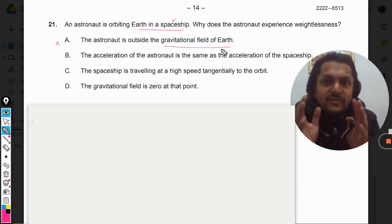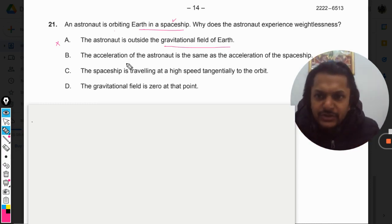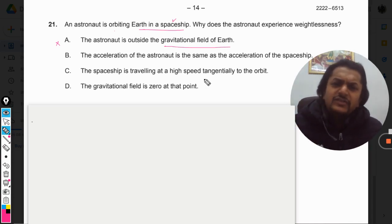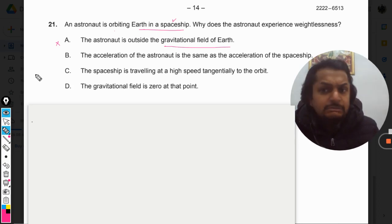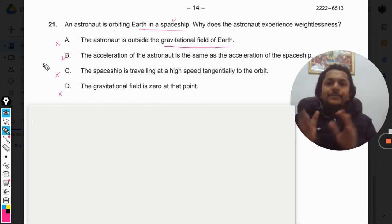Second: The acceleration of astronaut is same as that of the acceleration of spaceship. Well, this is right. Let me read other options also. The spaceship is traveling at very high speed tangentially to the orbit - absolutely wrong, doesn't make any sense. The gravity in the field is zero at that point - again this does not make any sense.